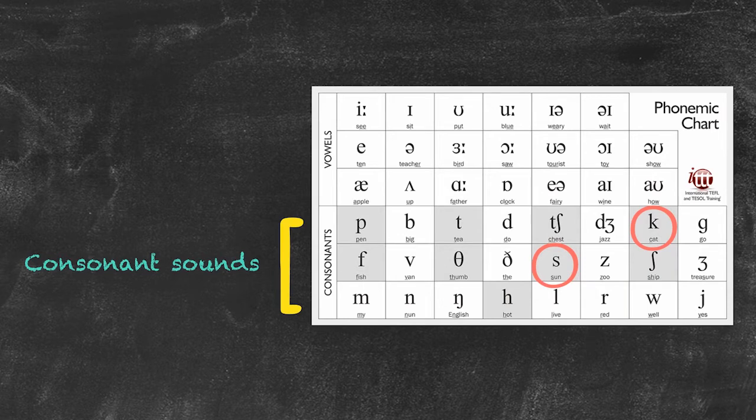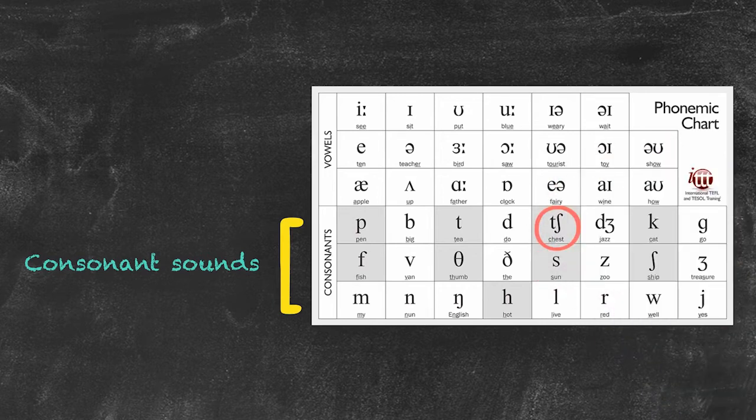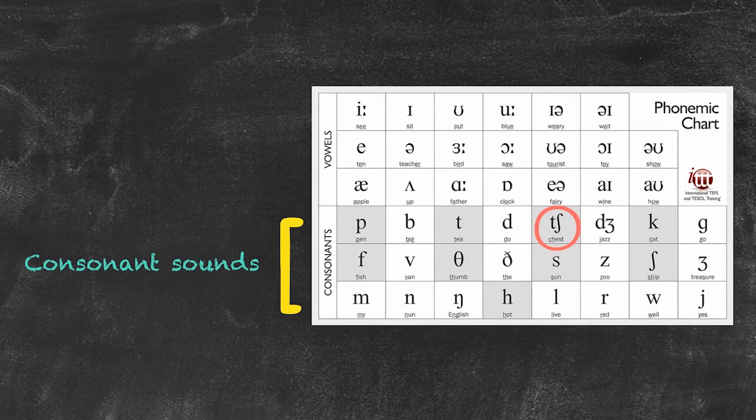However, we do have eight symbols which can confuse students when they're just getting this introduced to them. First, we have this symbol, which represents a CH sound, typically spelled with a CH.